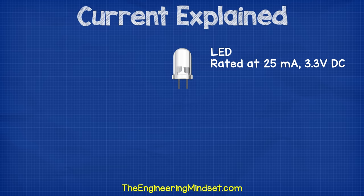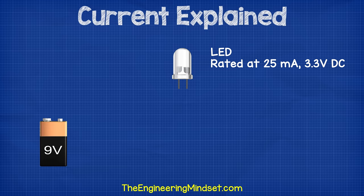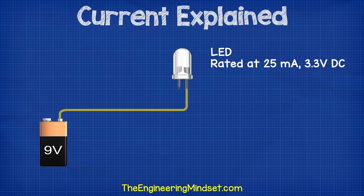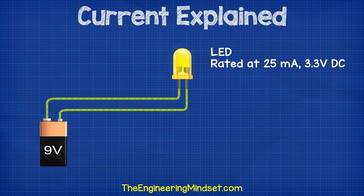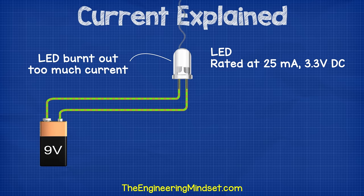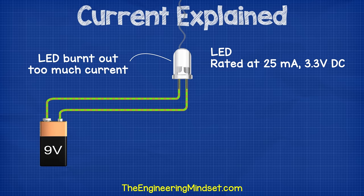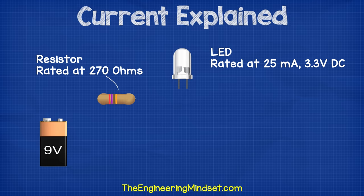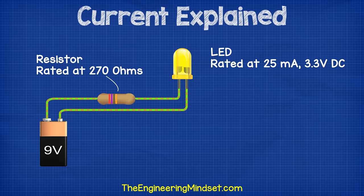For example, this LED is rated at 25 milliamps and 3.3 volts, but our battery is rated at 9 volts. So if we were to connect the LED to the battery, it would just burn out because it can't handle that much voltage and current. So to protect the LED, we need to place a resistor into the circuit. In this case, we'll use a 270 ohm resistor to bring the voltage and current down to a safe level for the LED.